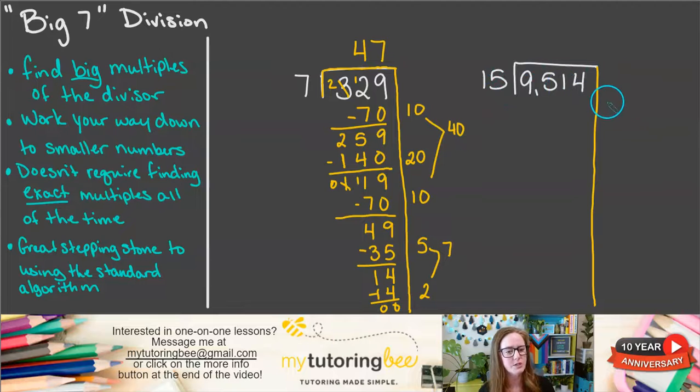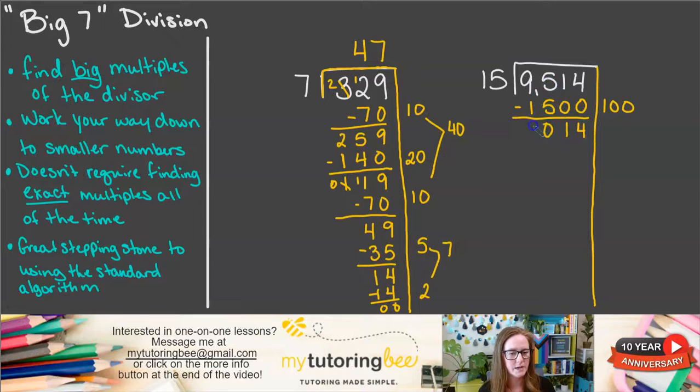So let's just start with 100. I feel that just feels like a good starting place for me. Again, you can start with whatever amount of groups of 15 that you want, as long as it doesn't go over 9,514. So 1 times 15 is 15, and then we've got those two zeros on the end. So we're going to be subtracting away 1,500.